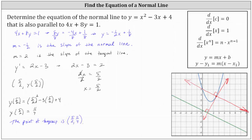Now we have all the information we need to find the equation of the normal line to the given curve that's also parallel to the given line. We know the slope of the normal line is negative 1 half and we know it passes through the point 5 halves comma 11 fourths. Let's find the equation in point-slope form where x1 is 5 halves and y1 is 11 fourths.